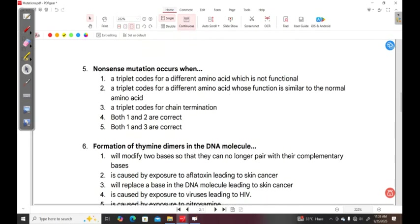Question five: Nonsense mutation occurs when - 1. a triplet codes for a different amino acid which is not functional, 2. a triplet codes for a different amino acid whose function is similar to the normal amino acid, 3. a triplet codes for a chain termination, 4. both one and two are correct, 5. both one and three are correct. I'll give you a short moment to think about it.